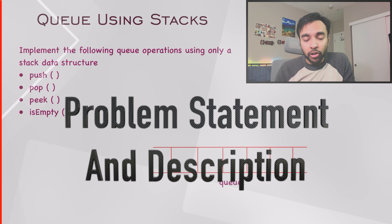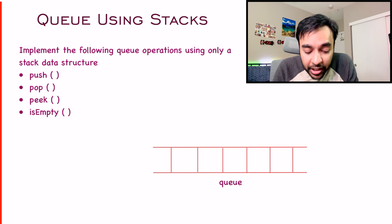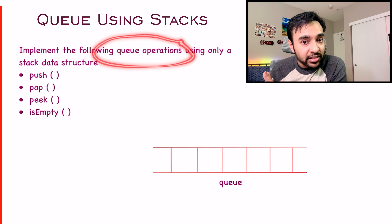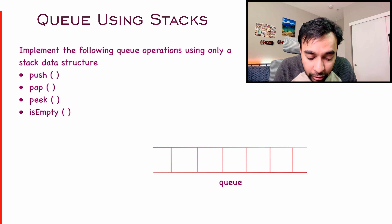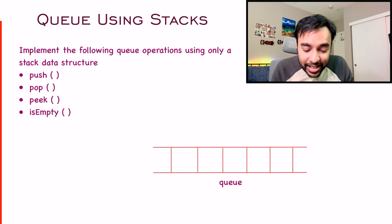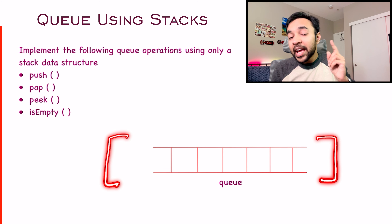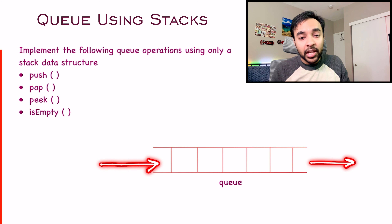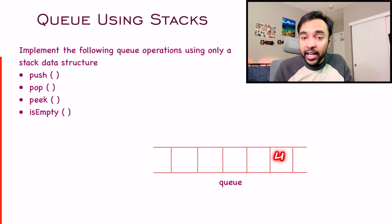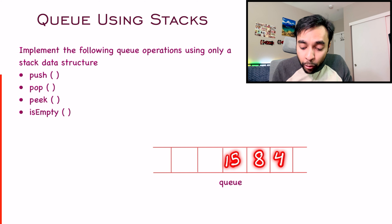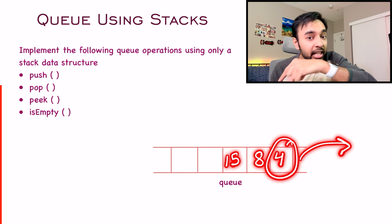First of all, let us make sure that we are understanding the problem statement correctly. In this problem you have to implement all of the operations that you usually perform on a queue data structure, and the only catch is that you have to perform these operations just by using a stack data structure. Just to give you a quick review, a standard queue follows the principle of first in first out. It simply means that any element that enters the queue first will be the first one to get out. So for example, if element 4 enters the queue first, then 8 and then 15 — if you try to pop out an element, 4 will be the first element to be popped out, because it entered the queue first.